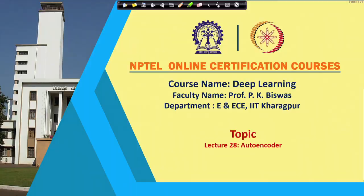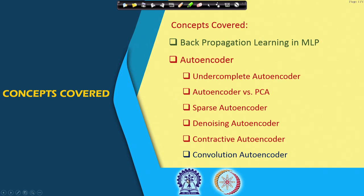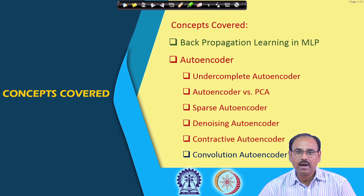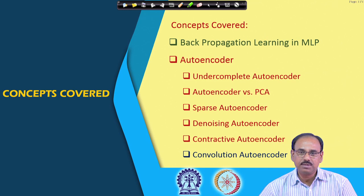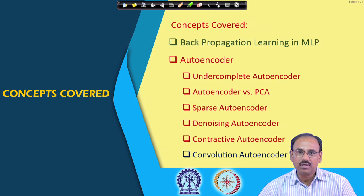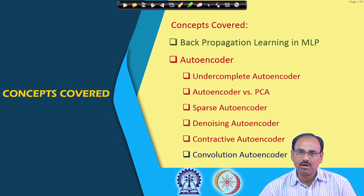Welcome to the NPTEL online certification course on deep learning. Till our previous class we talked about back propagation learning and we have seen how it is implemented in a feed forward neural network at the network level, and also how the gradient is back propagated within a particular node or different layers or different circuits within a particular node. From now onwards I will assume that you know back propagation learning, and whenever learning is discussed I will simply refer that the back propagation learning algorithm is used.